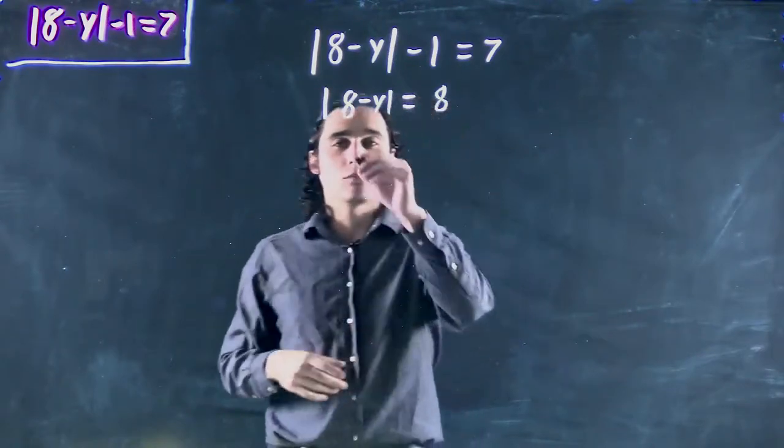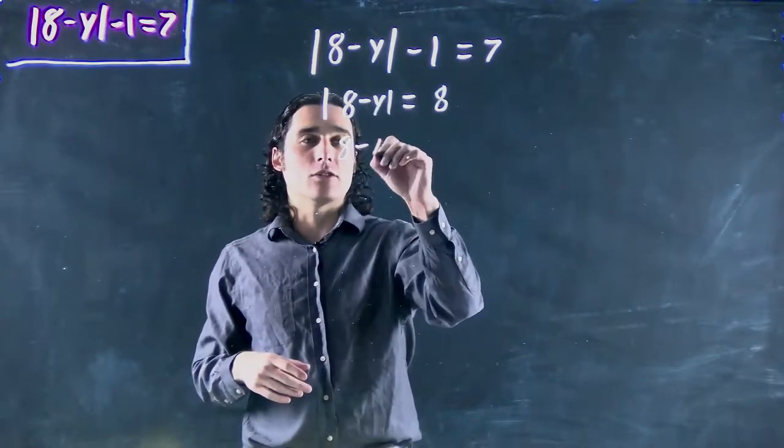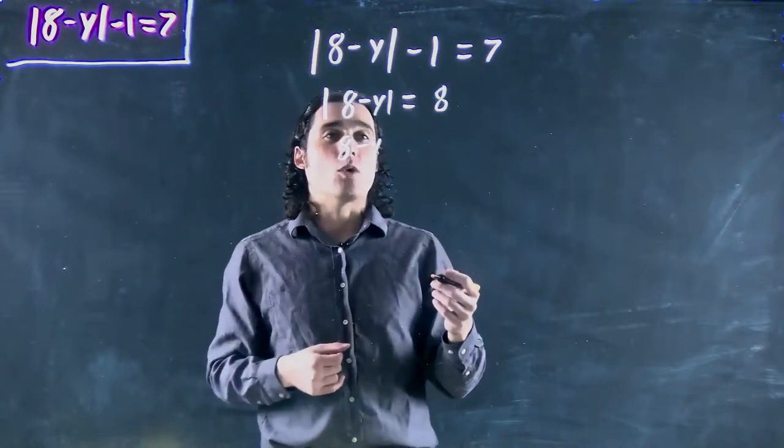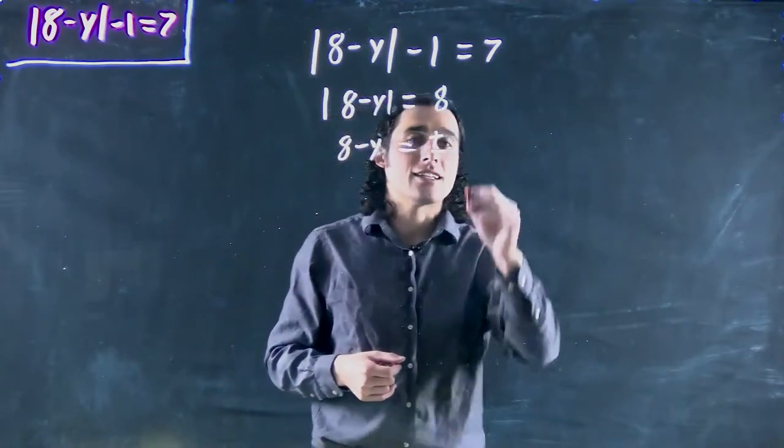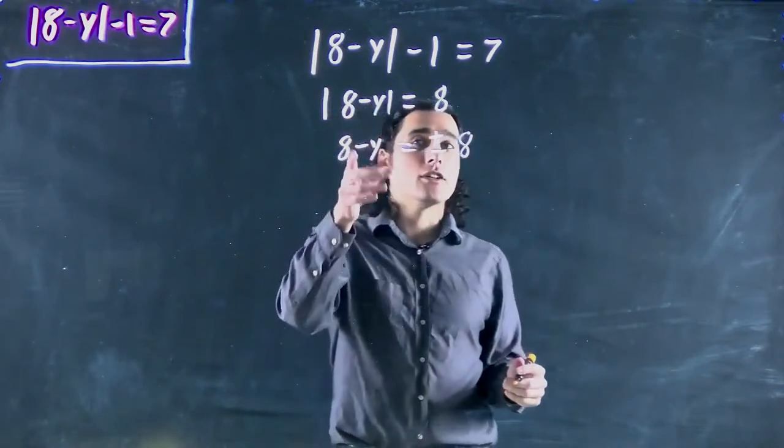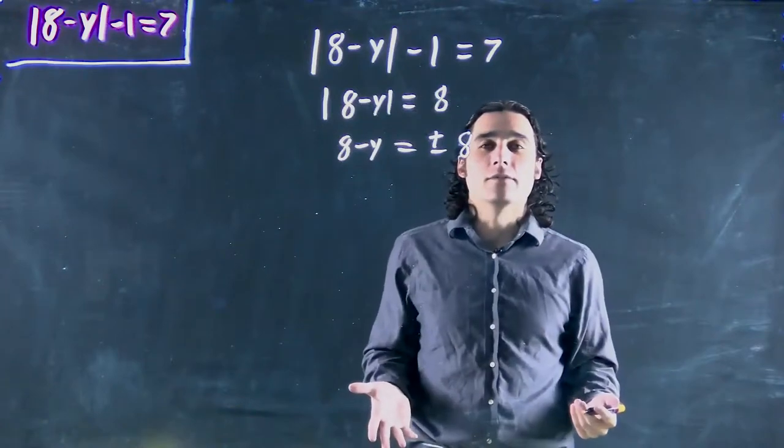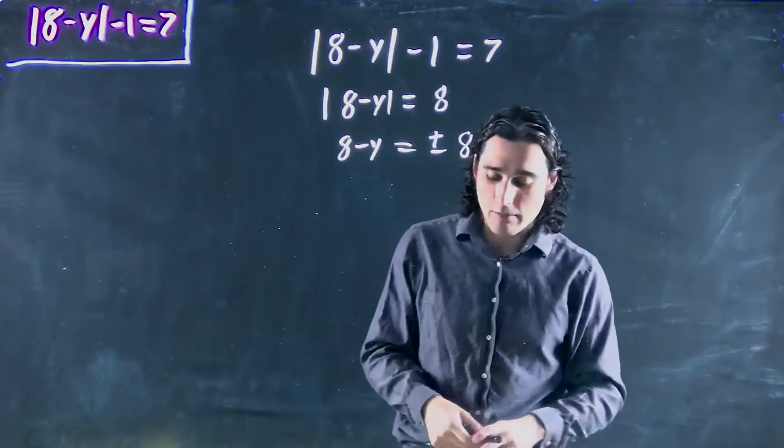So what does that mean? I eliminated the absolute value. So this side is just 8 minus y. And the other side, I get plus or minus 8 because either one could have been right because of the absolute value. And now I have to actually evaluate both cases.